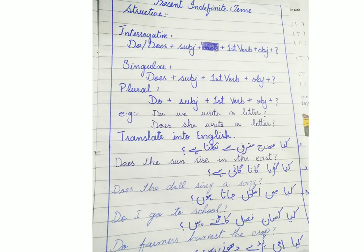Then come the interrogative sentences, where you ask questions by writing the helping verb do or does at the start. Do is used for plural nouns or plural subjects, and does is used for singular subjects and singular nouns. At the end of these statements — these exercises — you write a question mark to make them interrogative sentences.